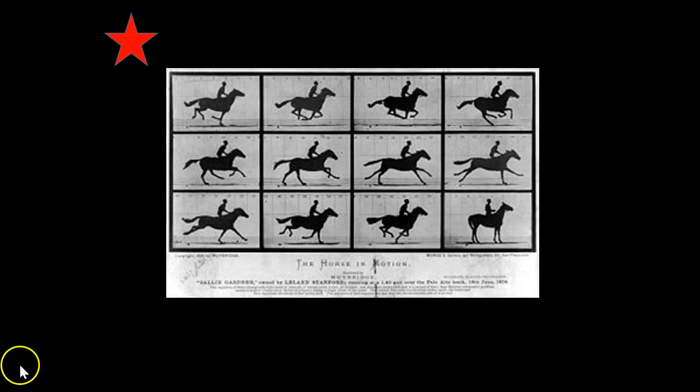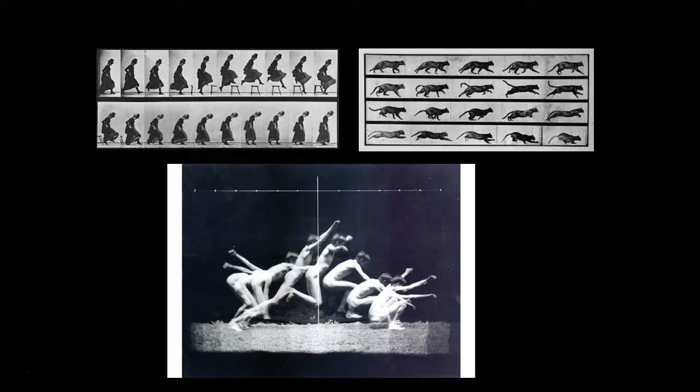In 1888, George Eastman developed the dry gelatin roll film — the 35mm film that previous generations used to take pictures. Right now most people shoot digital and there is no need for film, chemicals, or light-sensitive paper. Here are some examples of other Muybridge motion studies, which are quite fun to look at.